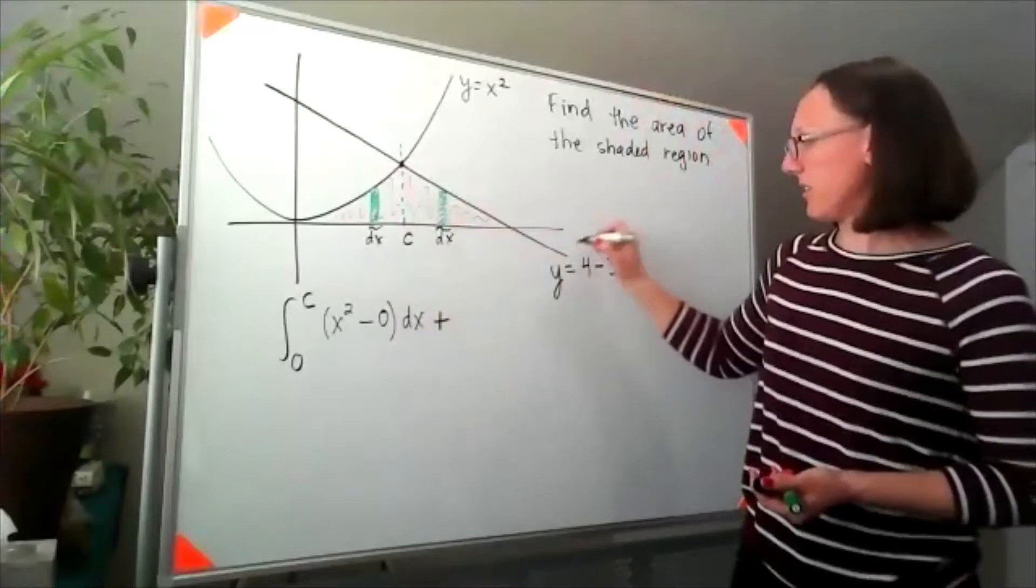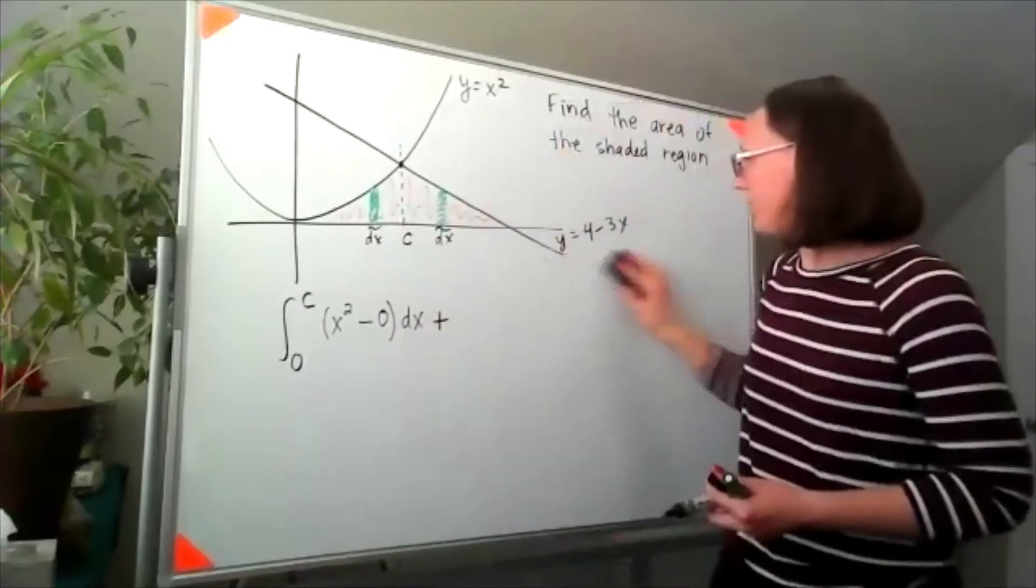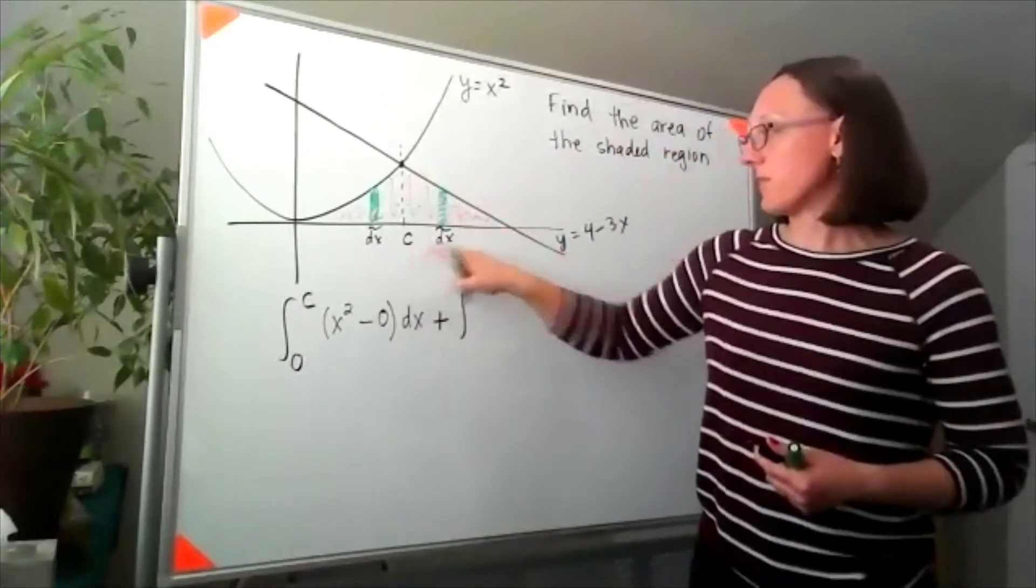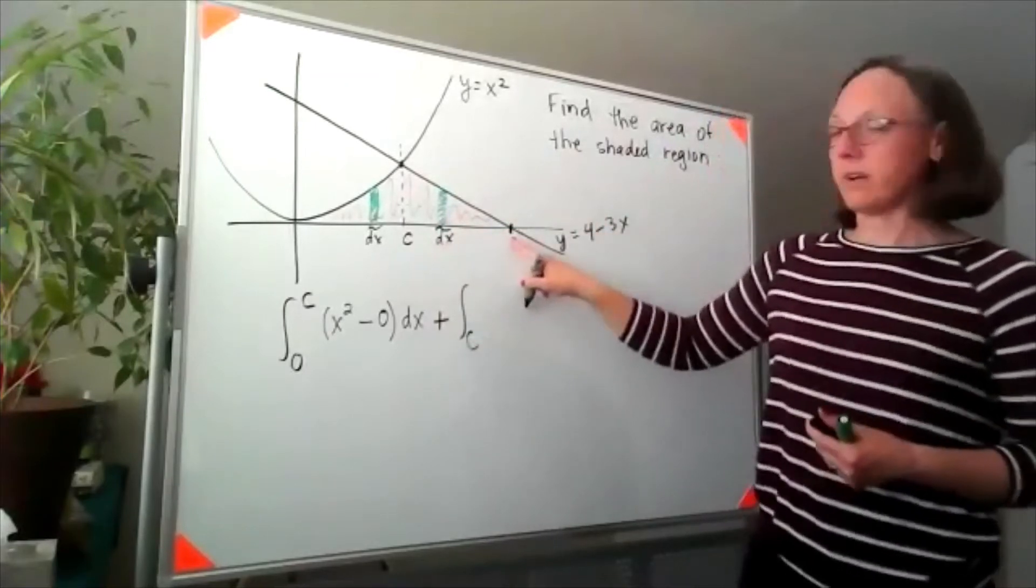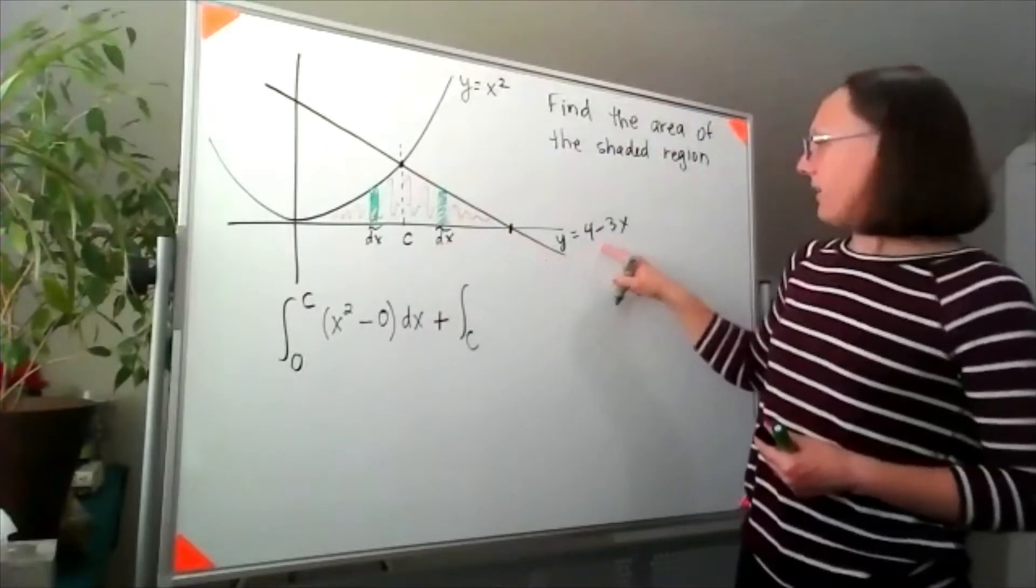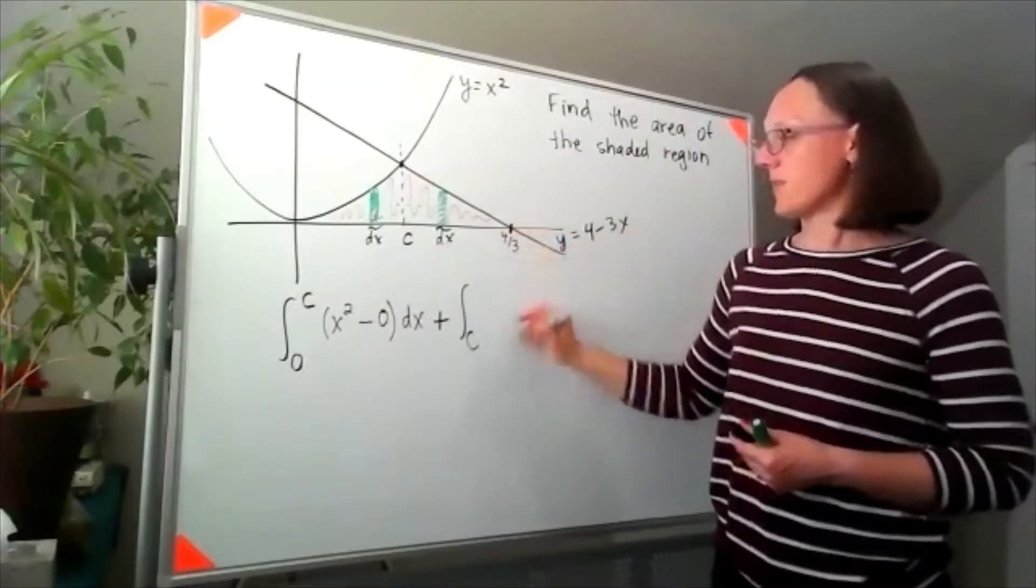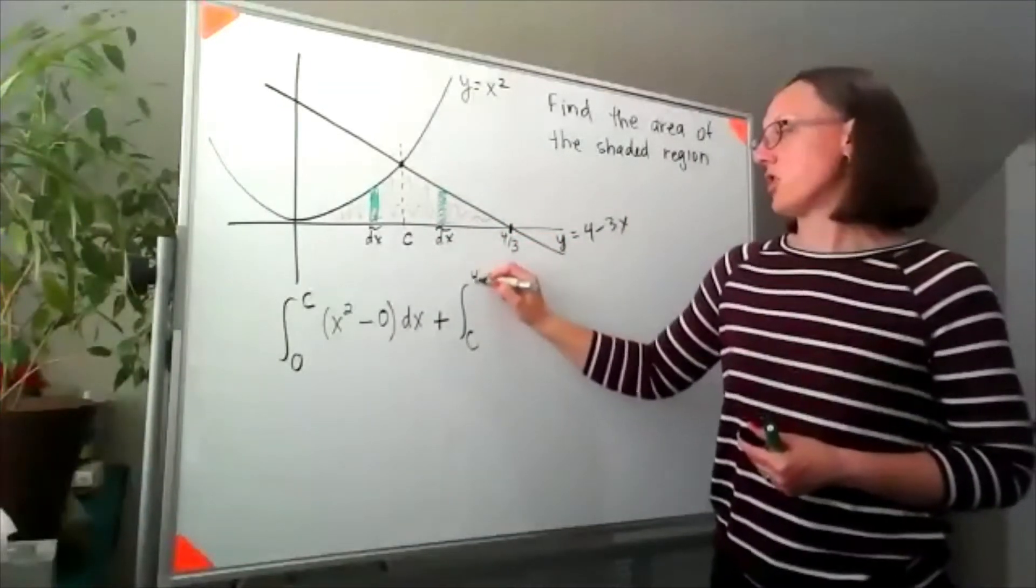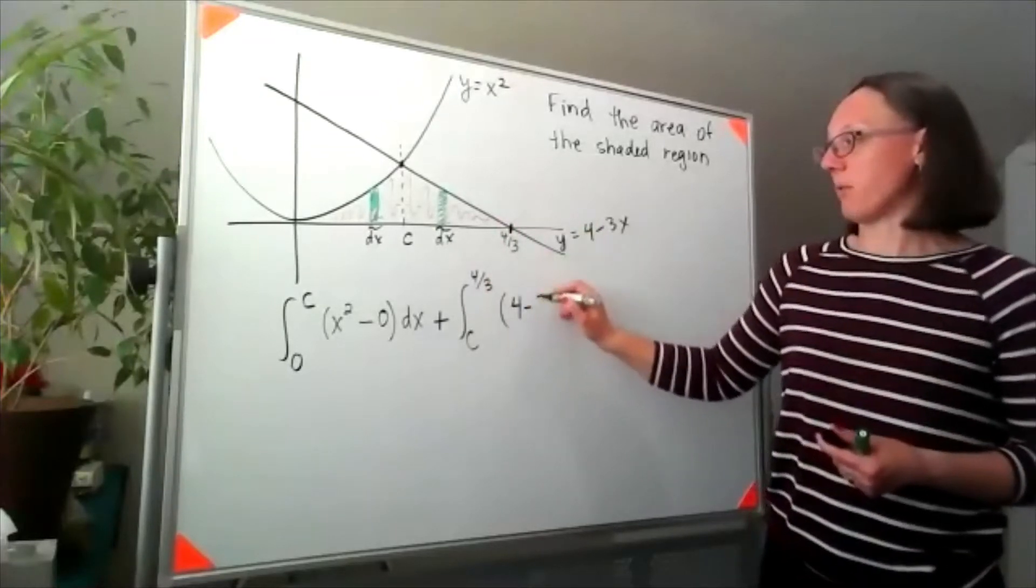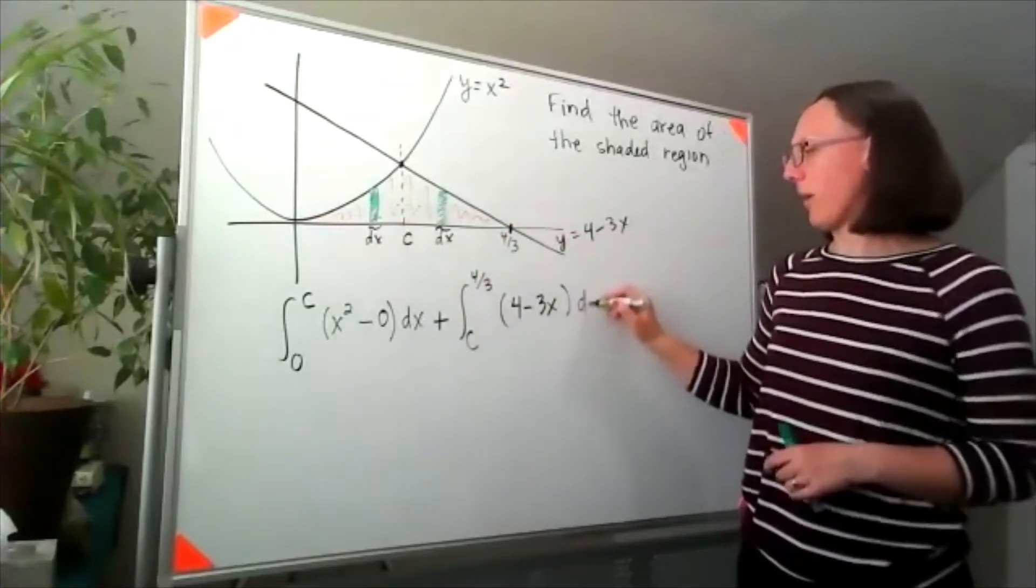In this next part, let me rewrite this equation, give myself a little bit more space. In this other region, I'd be going from c to this point out here. Well that's the x-intercept of this line and it looks like that x-intercept should be at four-thirds. So I'd be going from c to four-thirds. And now my function would be four minus three x. Technically minus the y equals zero again, I'm going to skip writing that piece.